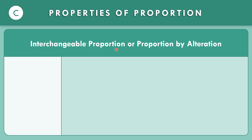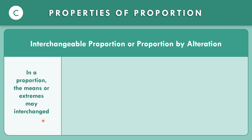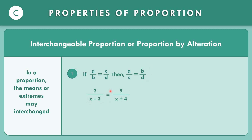Property C: interchangeable proportion, or proportion by alteration. In a proportion, the means or extremes may interchange. If A over B equals C over D, then A over C equals B over D — the numerators form the first ratio, the denominators form the second ratio. In the given example, 2 over (X minus 3) equals 5 over (X plus 4), so by interchanging: 2 over 5 equals (X minus 3) over (X plus 4).